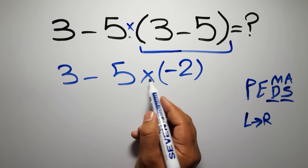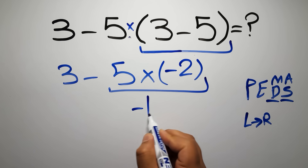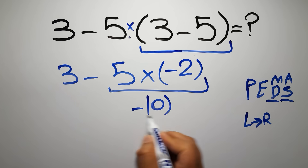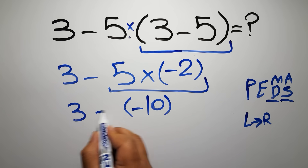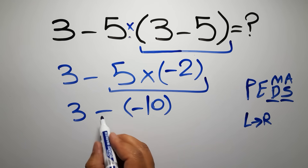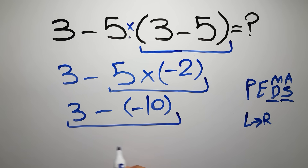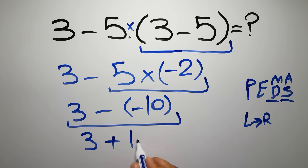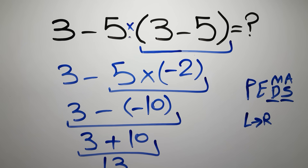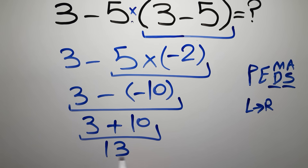5 times negative 2 gives us negative 10. So we have 3 minus negative 10. Negative times negative gives us positive, so we have 3 plus 10, which equals 13. And this is our final answer.